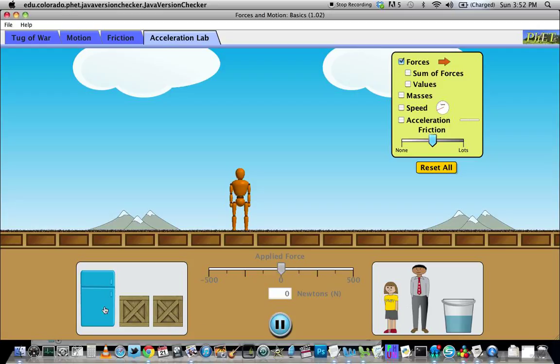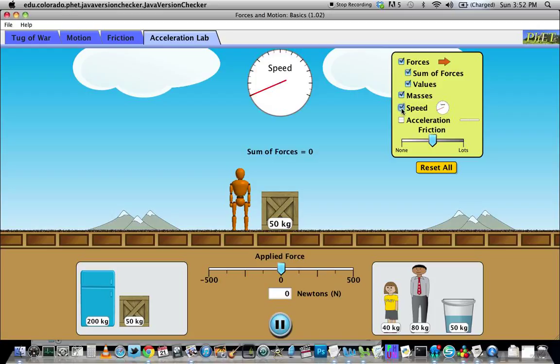You can use any one of these objects that you want. For example, you could choose this crate here. And once you've selected your object, go ahead and select all of these boxes so you can see all this stuff.